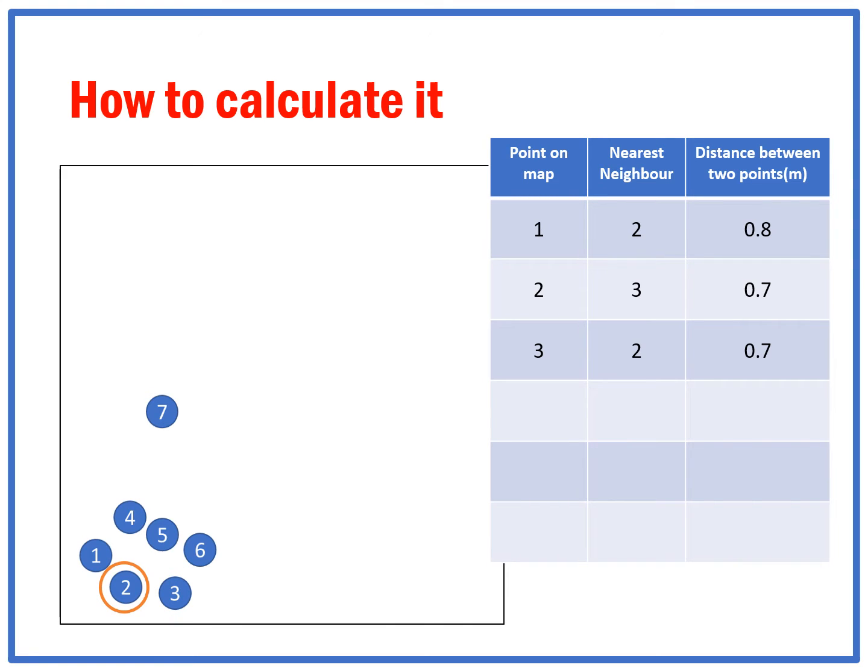Then the nearest neighbor to point three is point two. Then point four - the nearest neighbor is five. Point five's nearest neighbor is four. Point six's nearest neighbor is five, and so on, building up as we go.